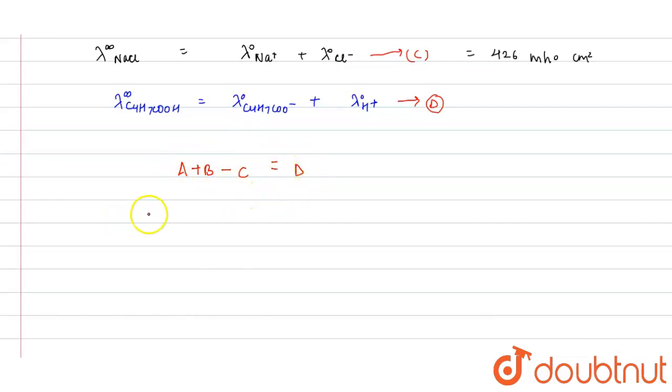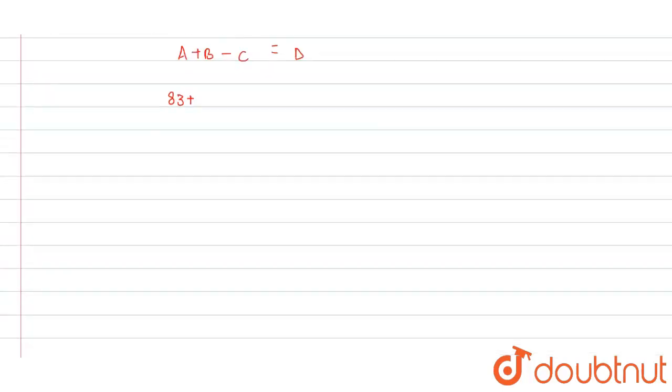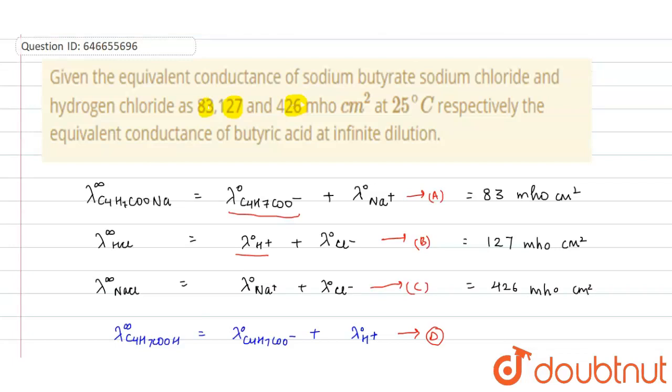So put the values: A plus B is 83 plus 127 minus C, minus C means 426.